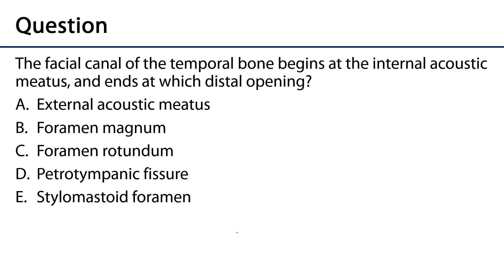The assessment question: the facial canal of the temporal bone begins at the internal acoustic meatus and ends at which distal opening? The external acoustic meatus — no, that's the ear canal for sound to the tympanic membrane. Foramen magnum — no, that's for the brain stem and vertebral arteries. Foramen rotundum — no, that's V2. Petrotympanic fissure — no, that's where chorda tympani enters the infratemporal fossa. That leaves the stylomastoid foramen: nestled between the styloid and mastoid processes of the temporal bone is where the motor root emerges from the facial canal out into the face.